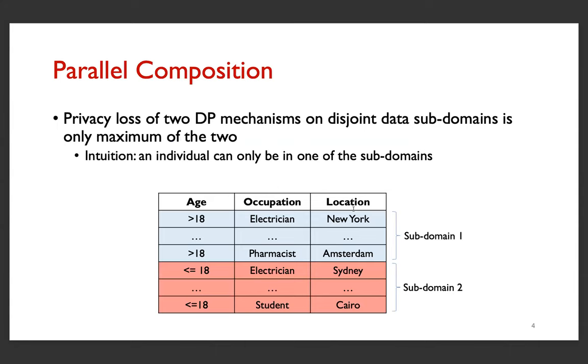Informally, this means that two mechanisms are composed in parallel if they work on disjoint subdomains. In this case, the privacy loss is only a maximum of the two. And the intuition behind that is that an individual can only be in one of these two data subdomains.